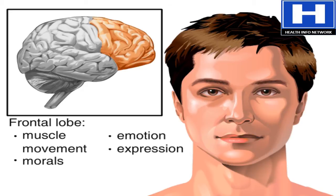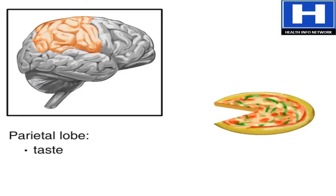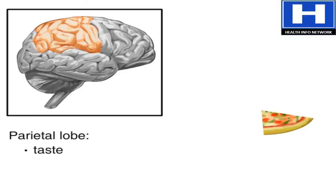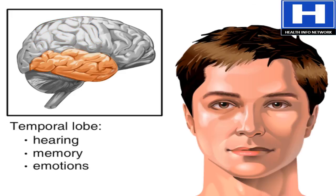There are two parietal lobes, one on each side of the brain. The parietal lobes are located behind the frontal lobe, towards the back of the head, and above the ears. The taste center is located in the parietal lobes.